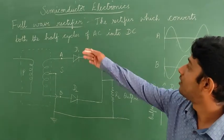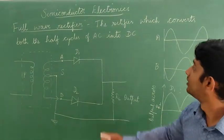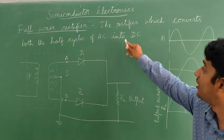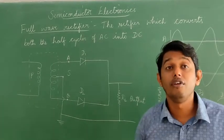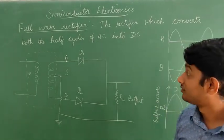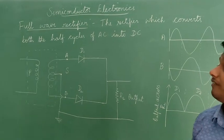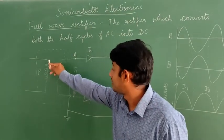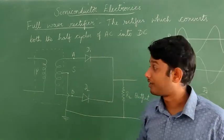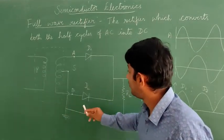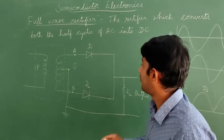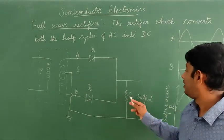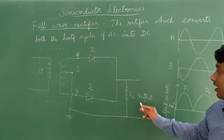The next topic is the full-wave rectifier. The rectifier which converts both half cycles of AC into DC is called a full-wave rectifier. This is the circuit, showing the primary and secondary of the transformer, diodes D1 and D2, and load resistance RL.